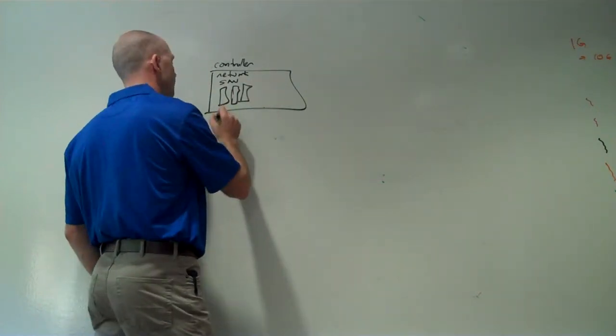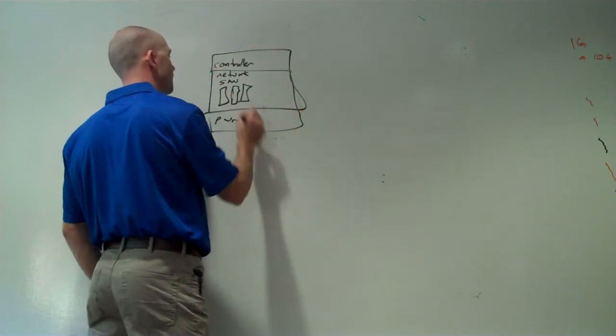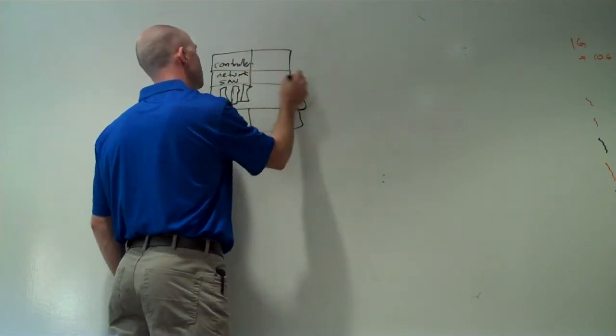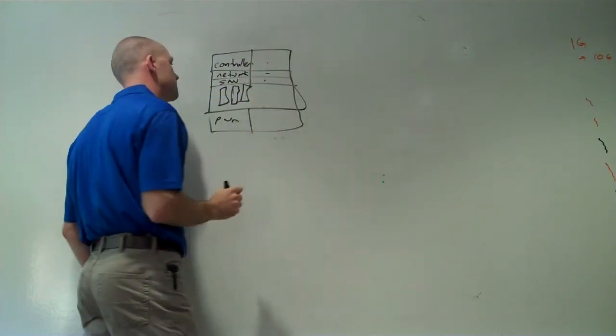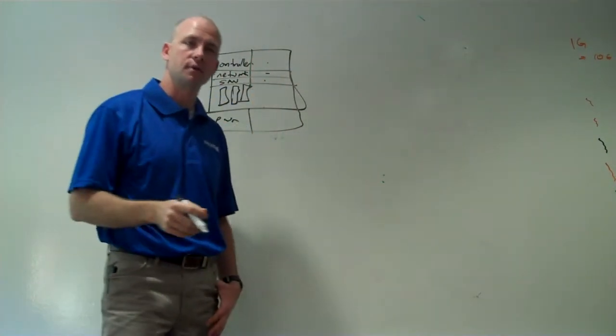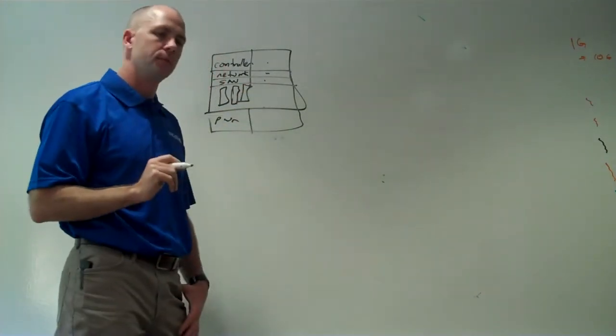And we have to have power connections. And then everything has to be reliable, so we have to have two of everything: two controllers, two network connections, two SAN connections. And that's great. Now we're off and running. We've got a bunch of servers and we can manage this blade server.